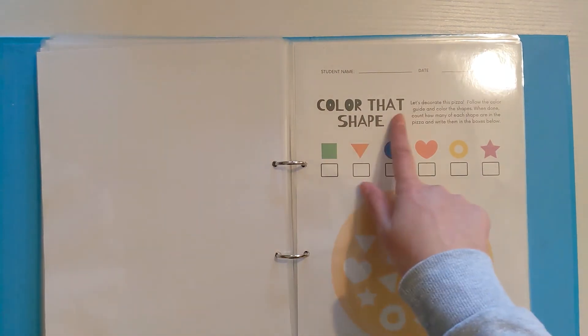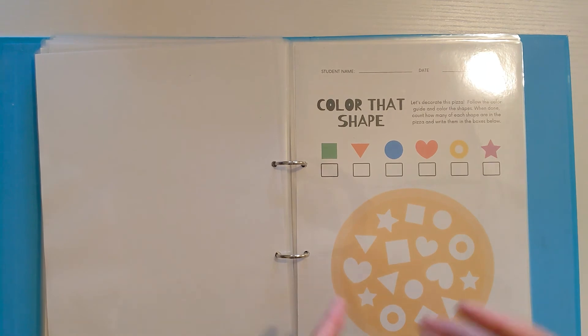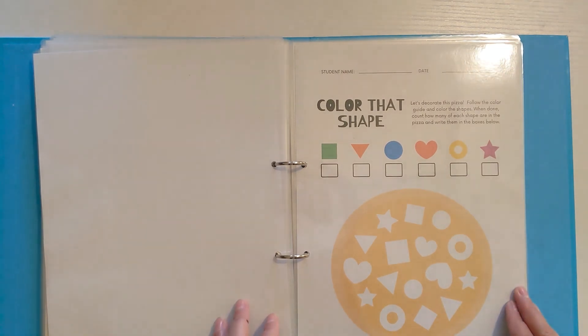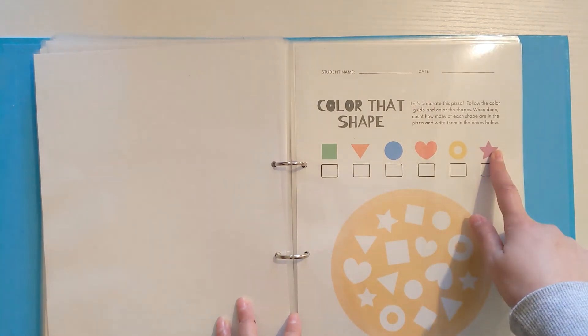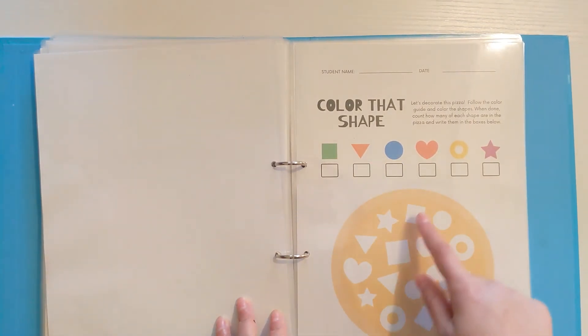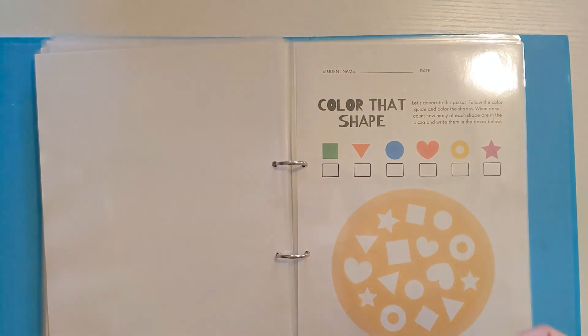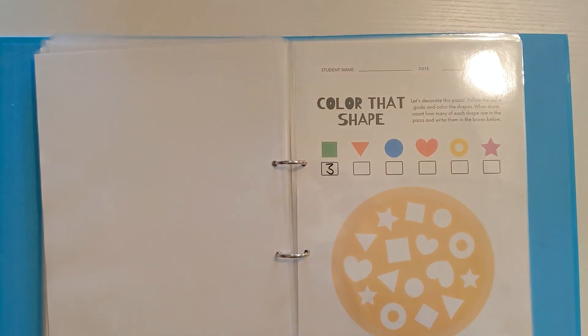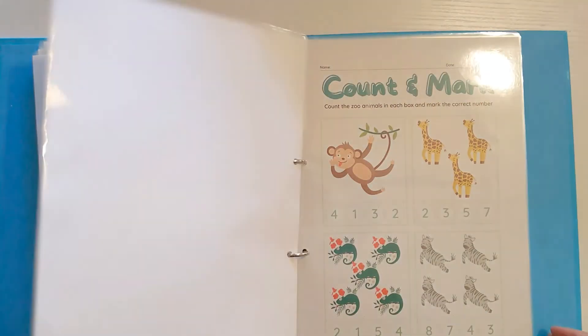Then I've created a color that shape worksheet. Let's decorate the pizza. This steps up a little bit in terms of difficulty. This time they have to follow the color guide and color the shapes. So all the squares have to be green when they've colored them in. They have to write the correct number in the box below here. That's another way to show them that they can find shapes anywhere, even in food.